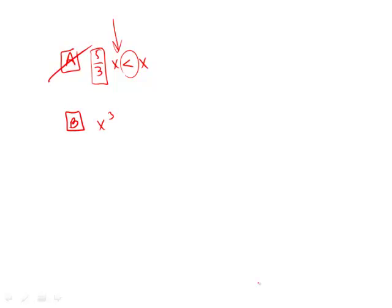x cubed is less than x. This is exactly the case when one of two things happens. When we have a fraction between zero and one, such as one-half, we get one-eighth is less than one-half, and that is correct.